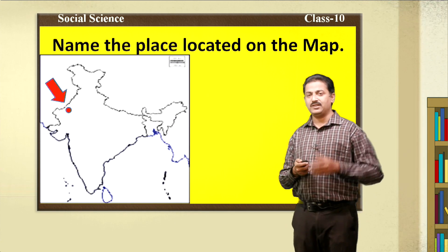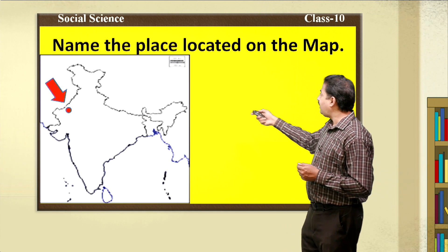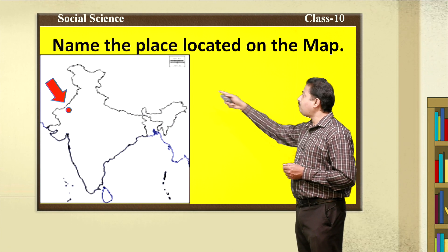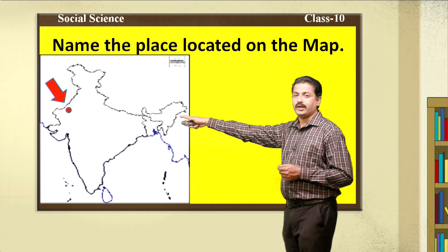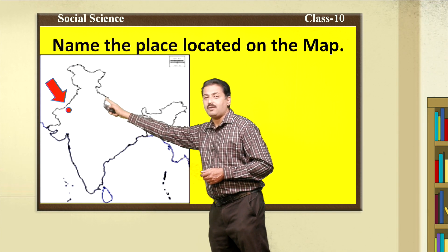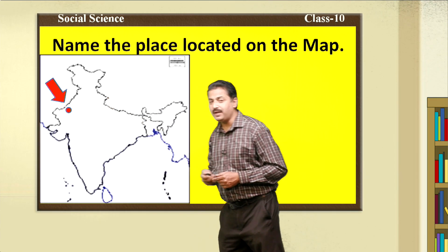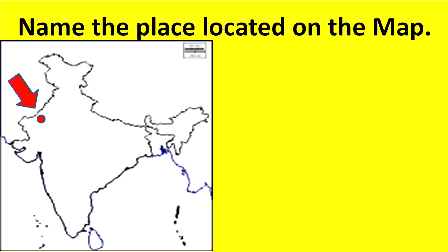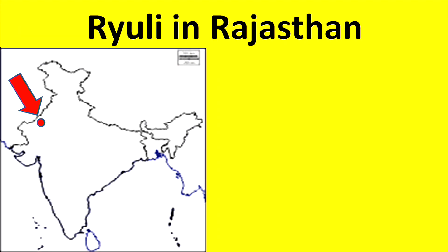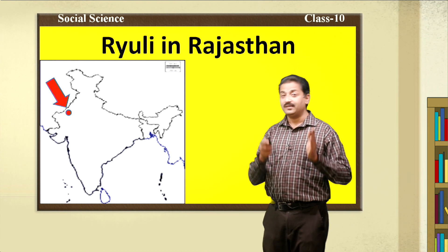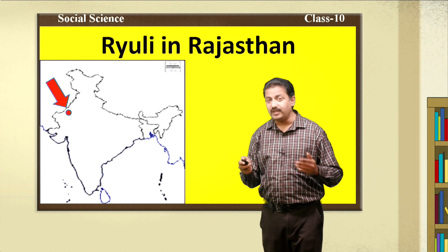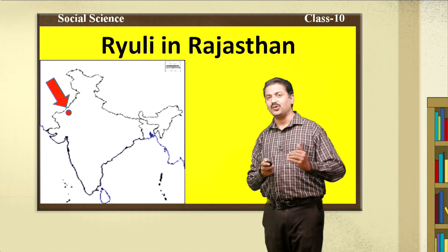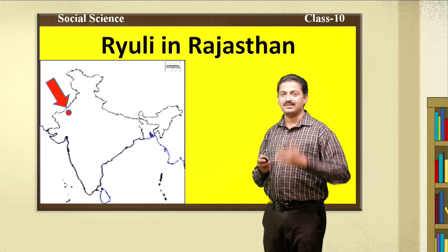One more place for you. Again on this map of India, one more place is located. Can you name this place? Most of you have answered correctly. The answer is Roily in Rajasthan. Why is Roily known for? That also I will explain in this lesson.